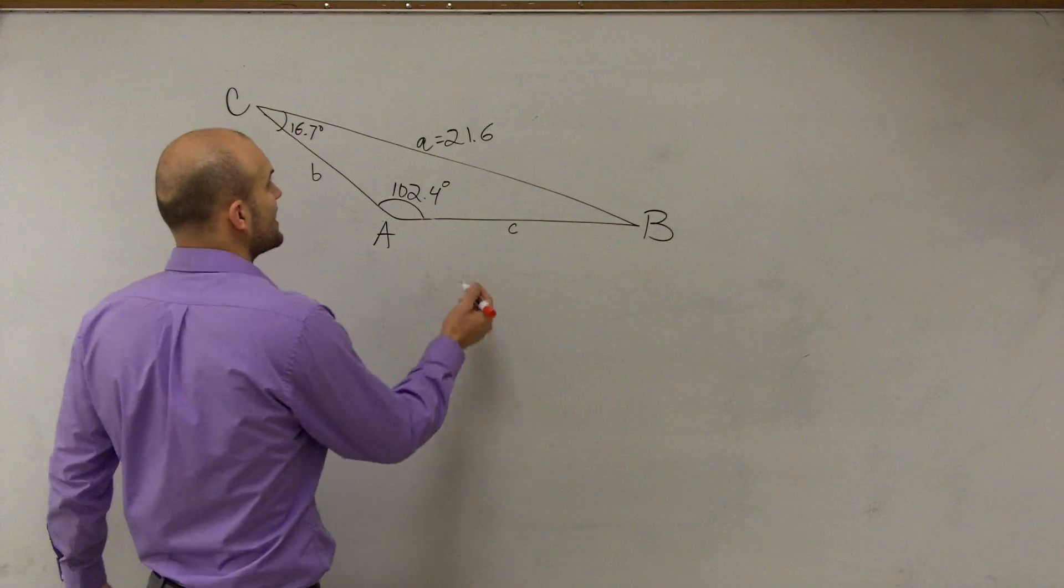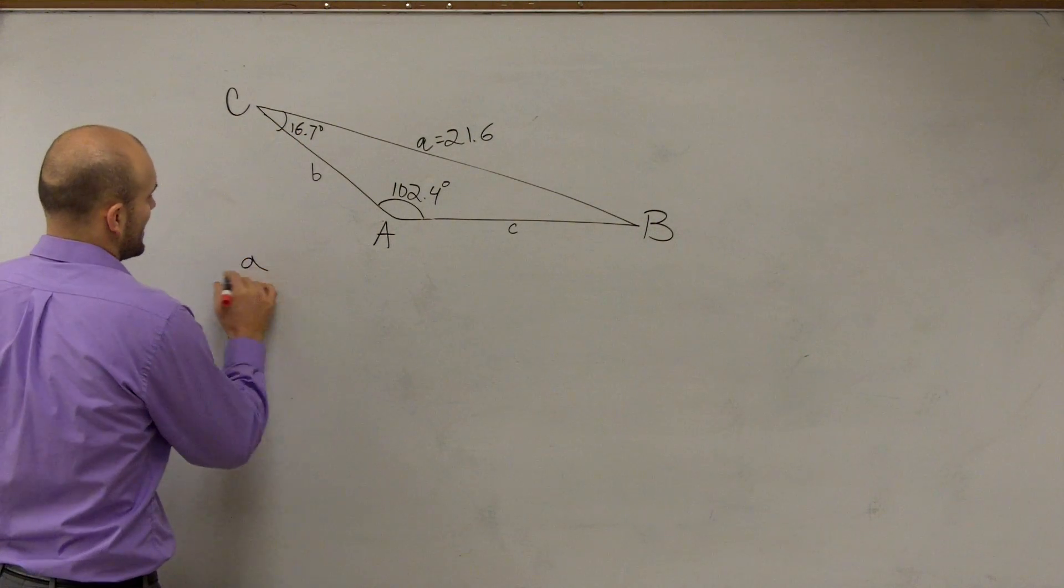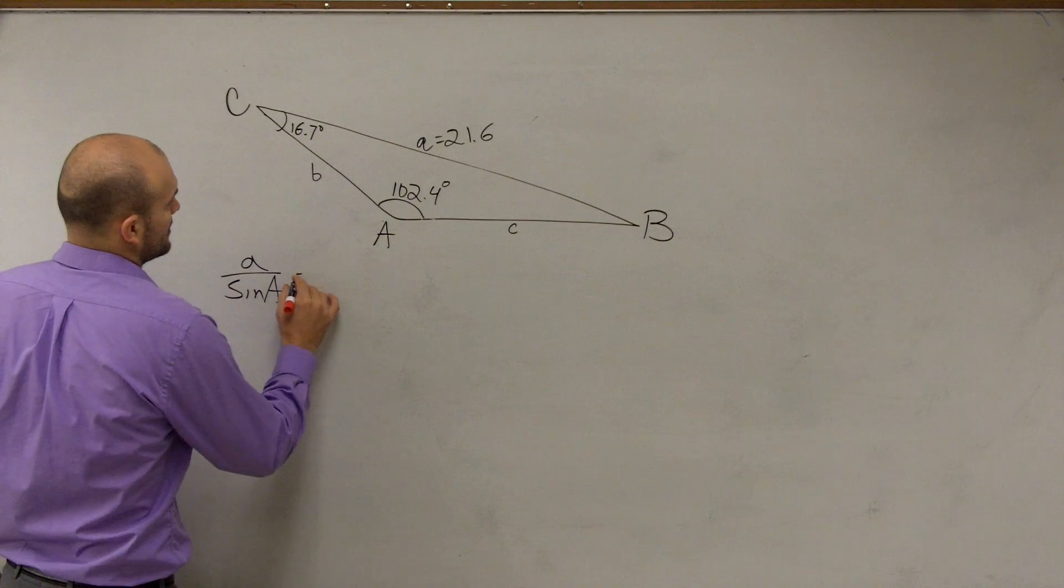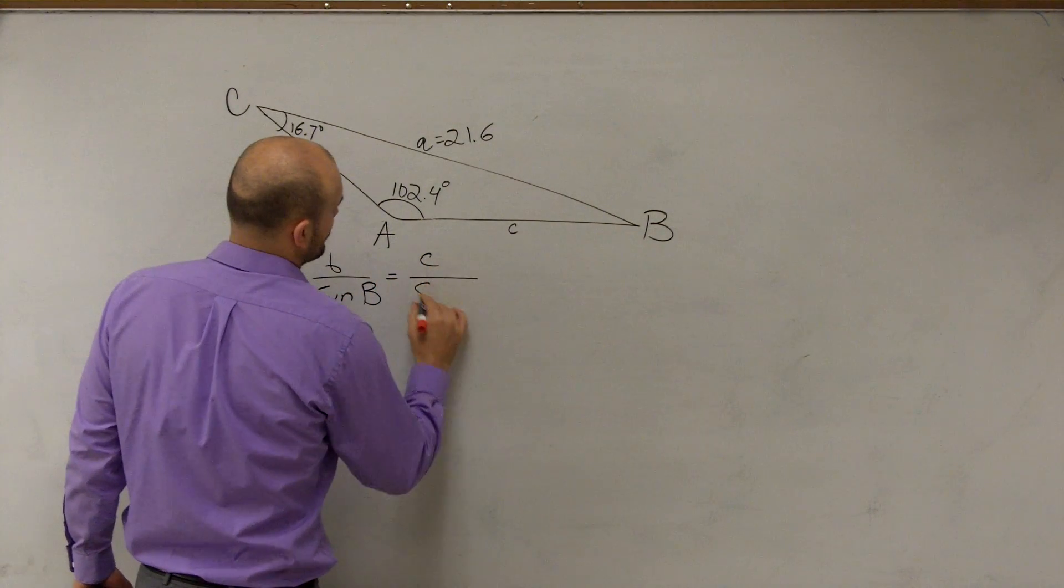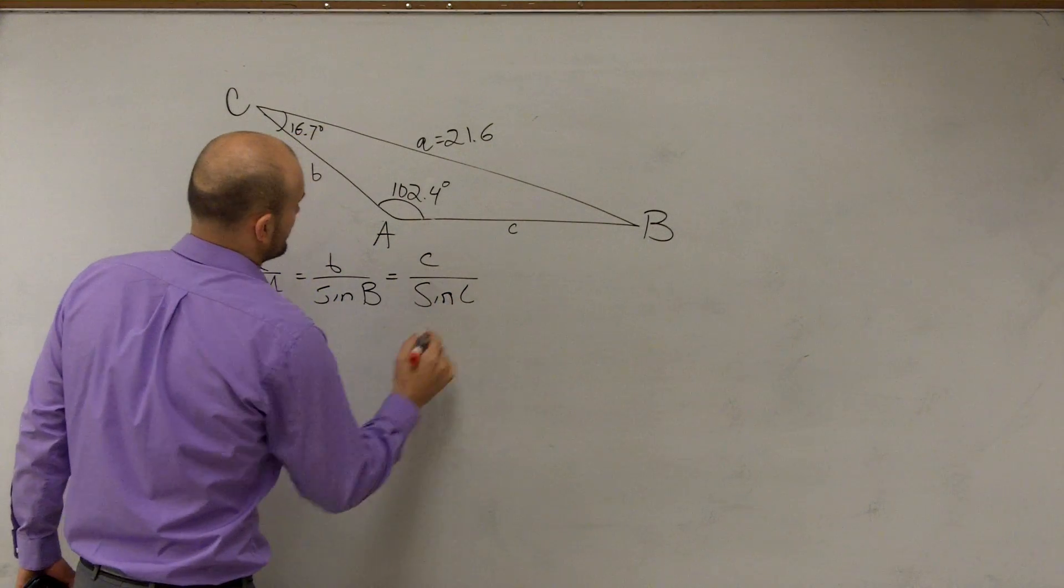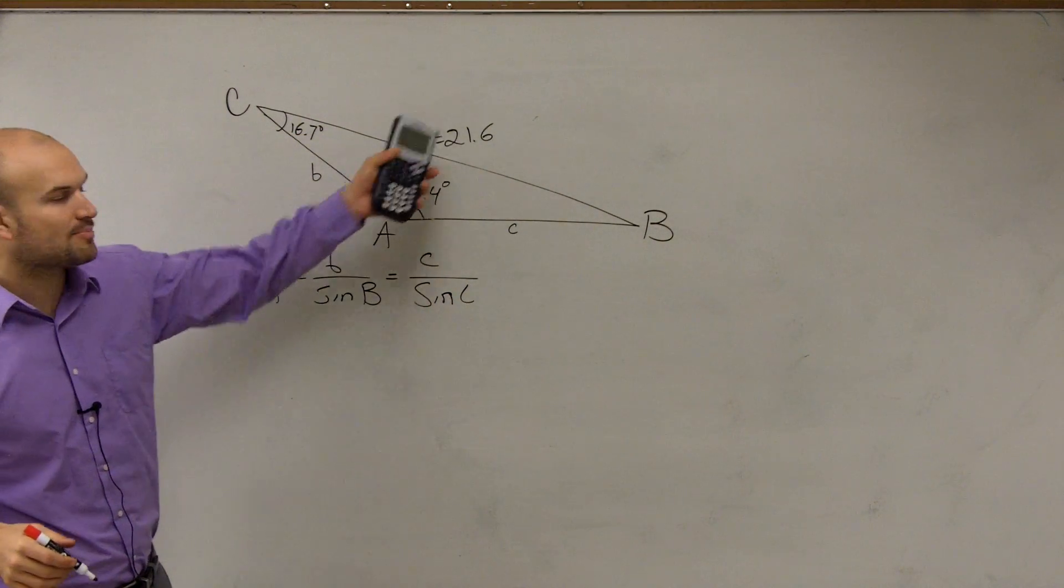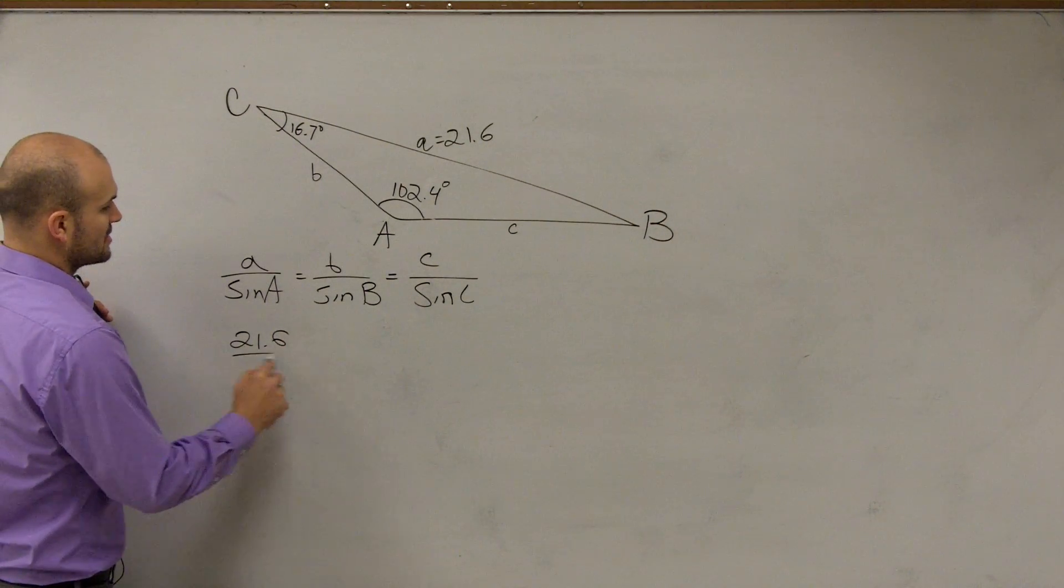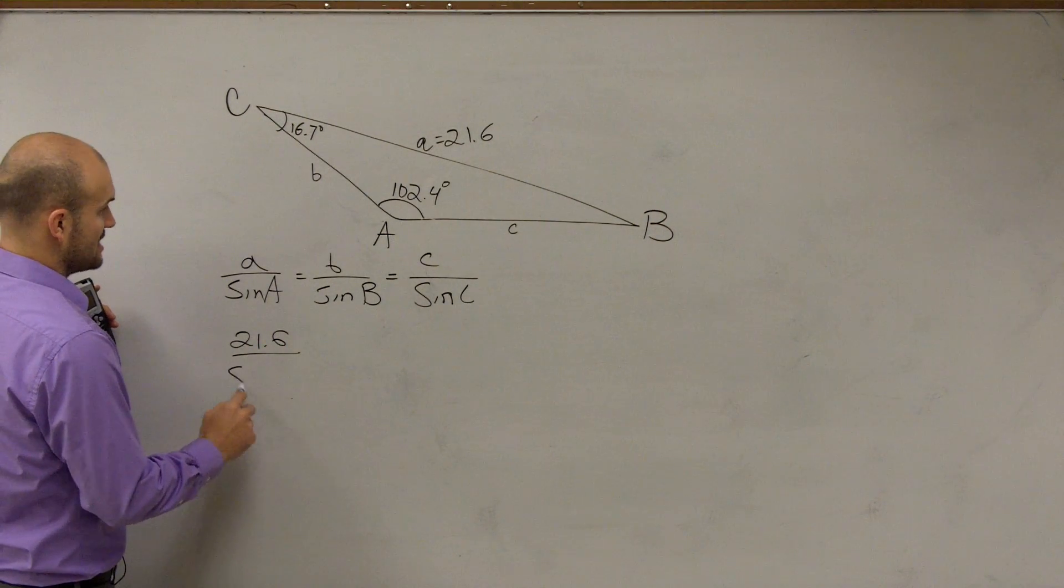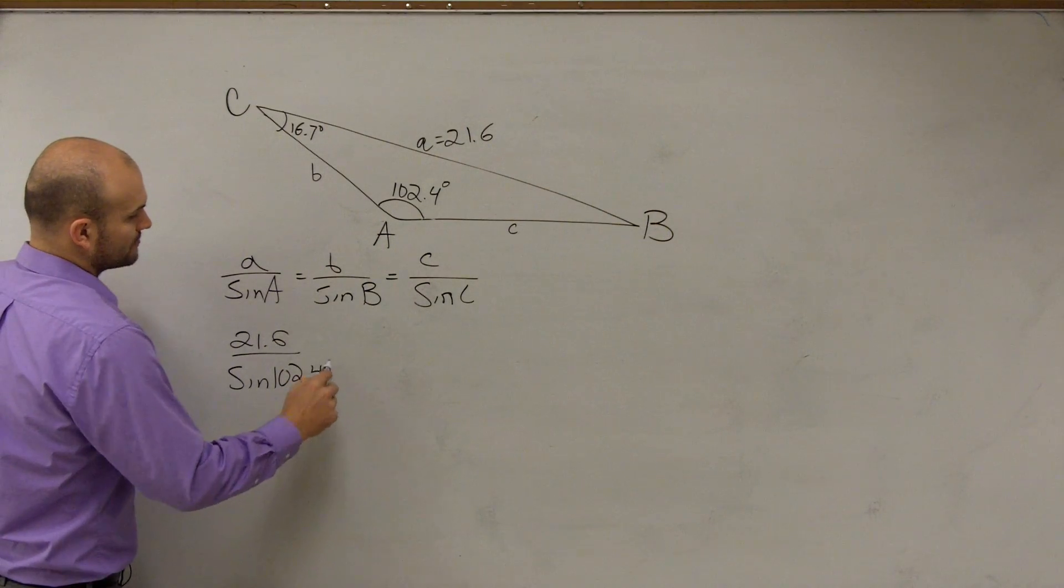Let's just write up the whole Law of Sines so we can practice it. So we have A over sine of A equals B over sine of B equals C over sine of C.